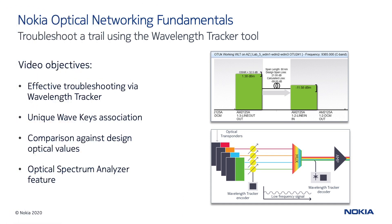I'll provide an overview of the Wavelength Tracker feature to demonstrate how it can enhance troubleshooting operations to achieve fast resolution timeframes. We'll see that the Wavelength Tracker uses unique wave keys to mark every service within the 1830 domain, to enforce fault isolation by providing troubleshooting skills such as Optical Spectrum Analyzer, and in general by allowing a real-time comparison against the network design parameters.